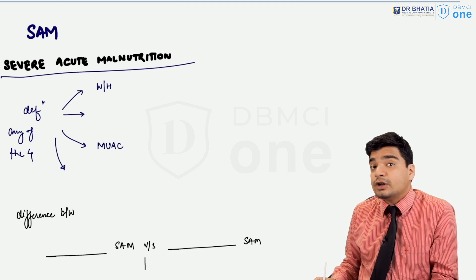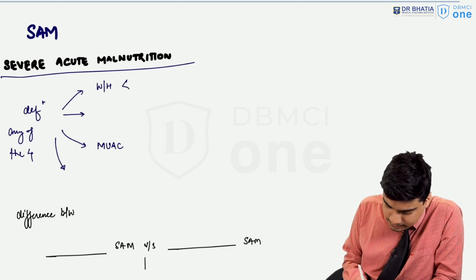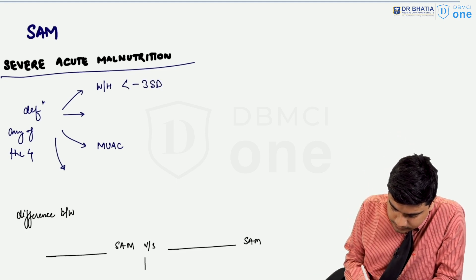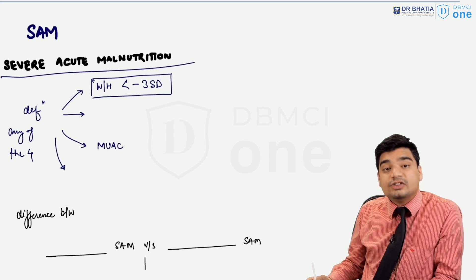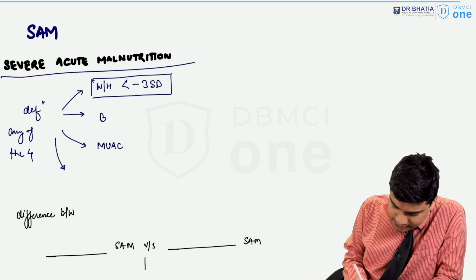The first is if the weight for height is less than minus three standard deviation. The other criteria is if there is bilateral pedal edema.